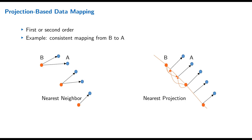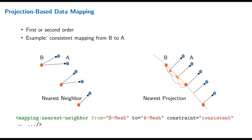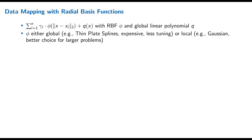Second-order accuracy for nearest-projection is only true if the inter-mesh distance is much smaller than the element size — not the case in the picture, but true for many applications and meshes. In the config, we define a nearest-neighbor mapping from B-mesh to A-mesh with a 'consistent' constraint. There are two constraints in preCICE: consistent or conservative. In these pictures I've always explained the consistent case.